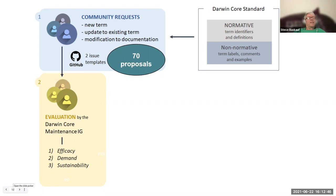In this latest proposal we had 70 proposals. Readiness for public review is determined by the maintenance group through three different change criteria. One is the efficacy requirement: is the change likely to have the desired effect? The second is the demand requirement: multiple organizations have to actually need the change to better achieve their missions. The third criterion is sustainability: the change won't adversely affect any of the existing practices or components of the standard. Those are the three things by which proposals are judged.